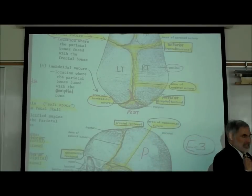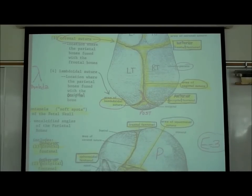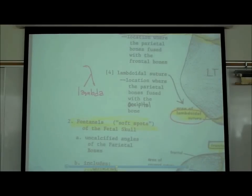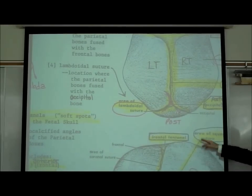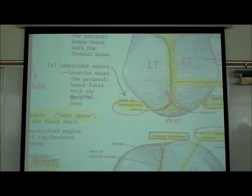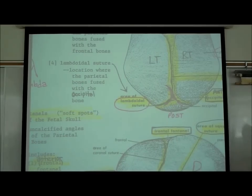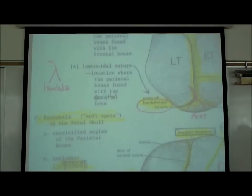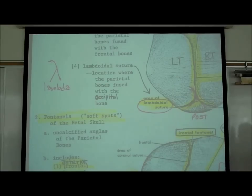Between the parietal bones and the occipital bone at the back of the skull is the lambdoidal suture — named because it resembles the Greek letter lambda. The sagittal, coronal, and lambdoidal sutures are all visible on both the fetal and adult skull. The only suture not visible on the adult skull is the frontal suture, because the two frontal bones fuse together completely as we age.